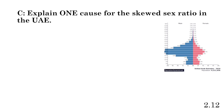Part C: explain one cause for the skewed sex ratio in the UAE. Looking at the population pyramid, it has a skewed sex ratio — more blue, meaning more males compared to females. Why? Guest workers. The UAE is in stage three of the DTM, so they have a lot of manufacturing and secondary sector jobs that bring in guest workers, and most guest workers are male.